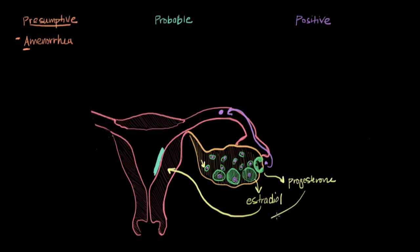And the progesterone acts on the endometrium of the uterus to increase the growth of glands and cause the storage of glycogen. And all of this is done to prepare the endometrium for the implantation of an embryo.